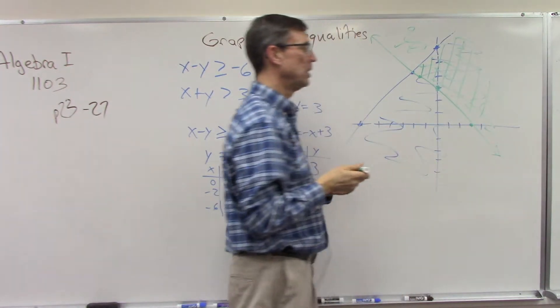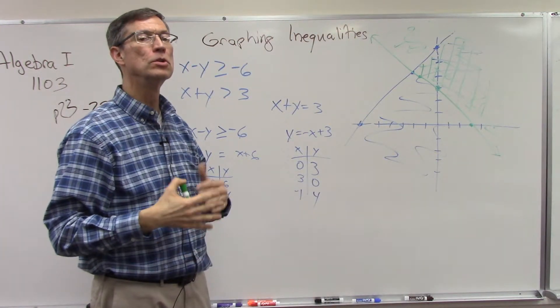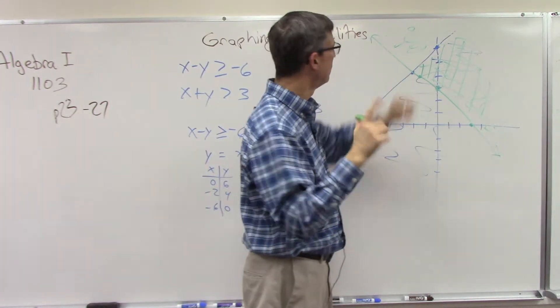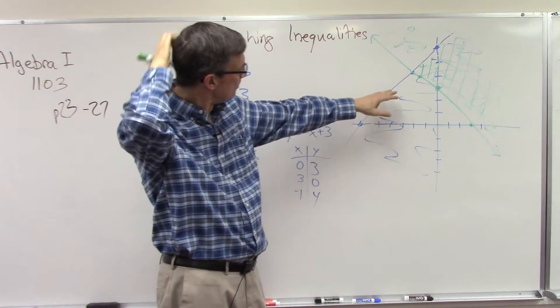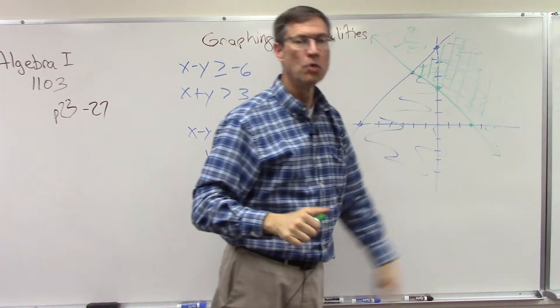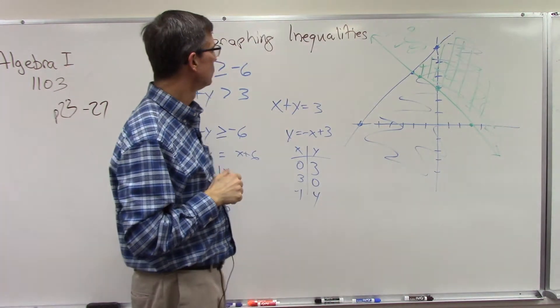And by shading the other side, now notice that this wedge right here is where both of these overlap. So actually that's what mathematicians say the solution is. They start by graphing both lines, and the zone where they overlap is the solution.